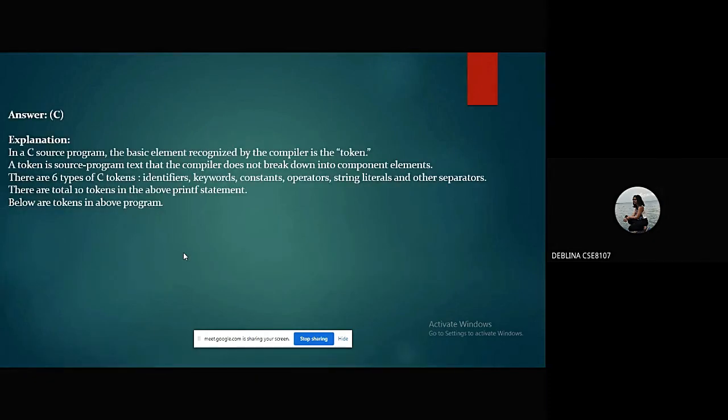The explanation being: in a C source program, the basic element recognized by the compiler is the token. A token is source program text that the compiler does not break down into component elements. There are six types of C tokens: identifiers, keywords, constants, operators, string literals, and other separators. There are total 10 tokens in our previous question. Below are the tokens of the given statement: printf, the string statement, comma, i, comma, the and operator, i, bracket, and the full stop.